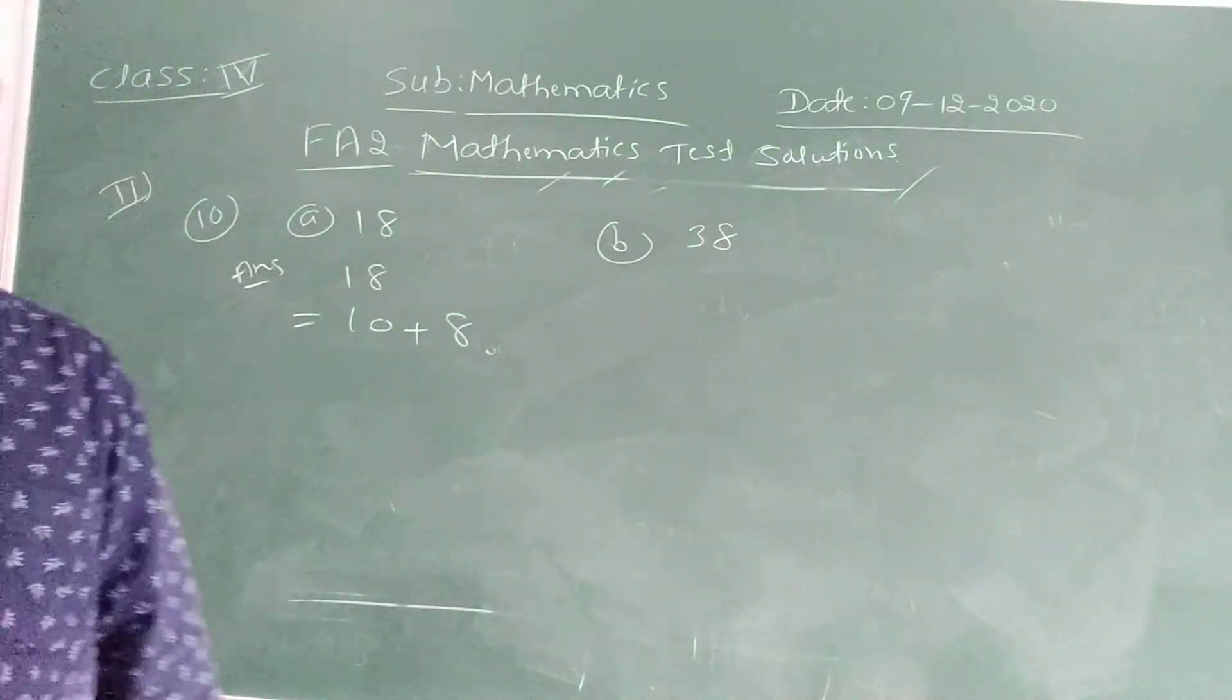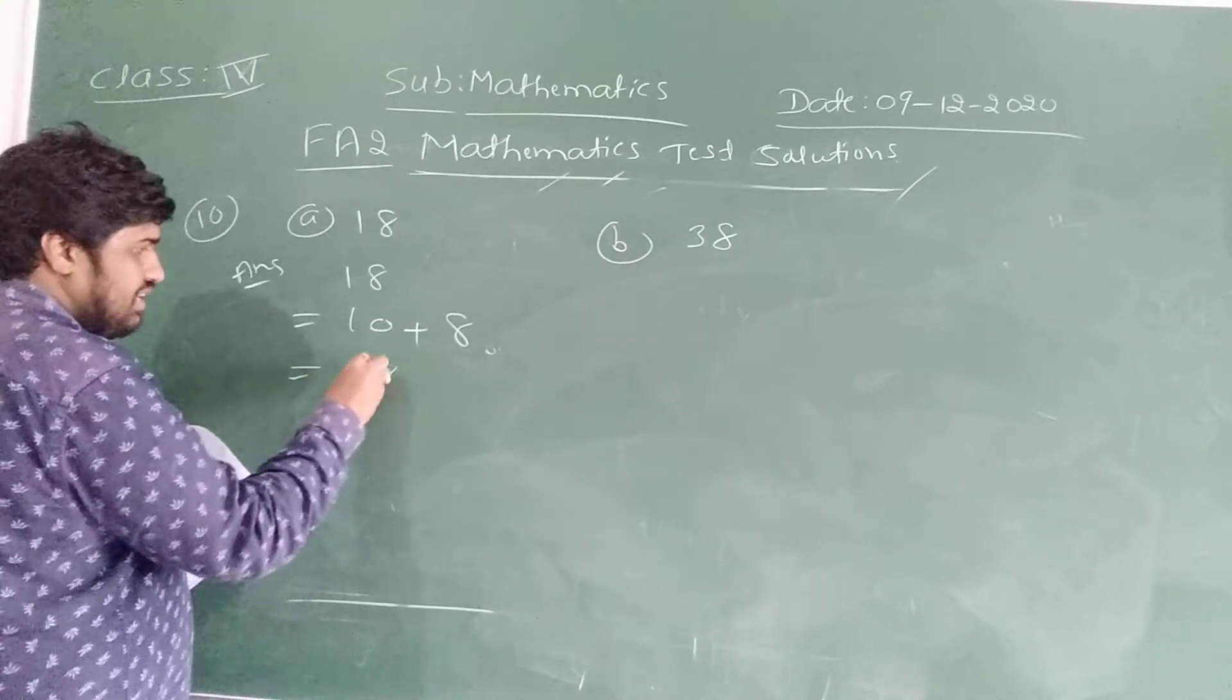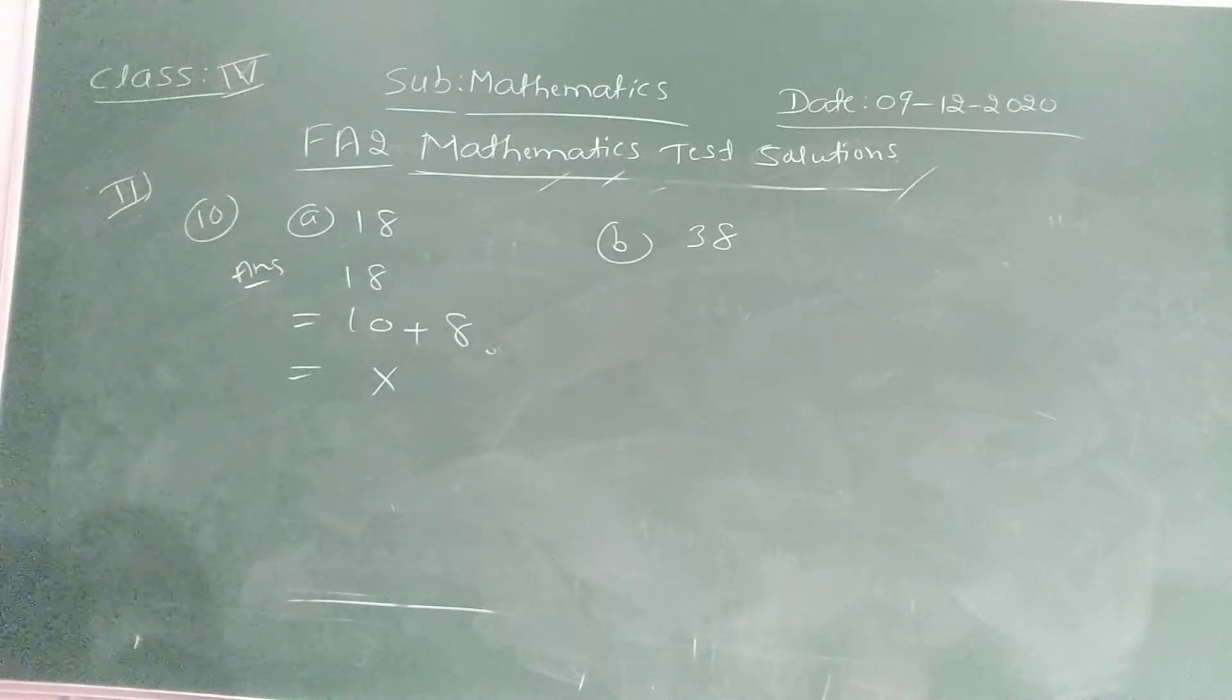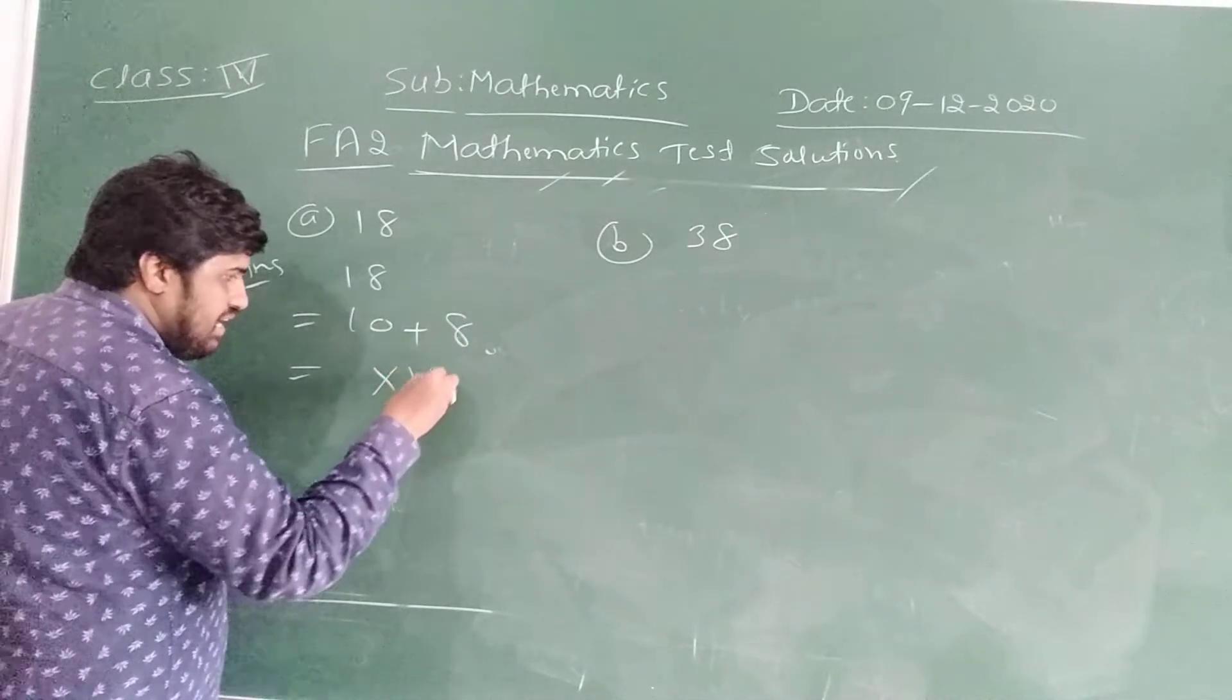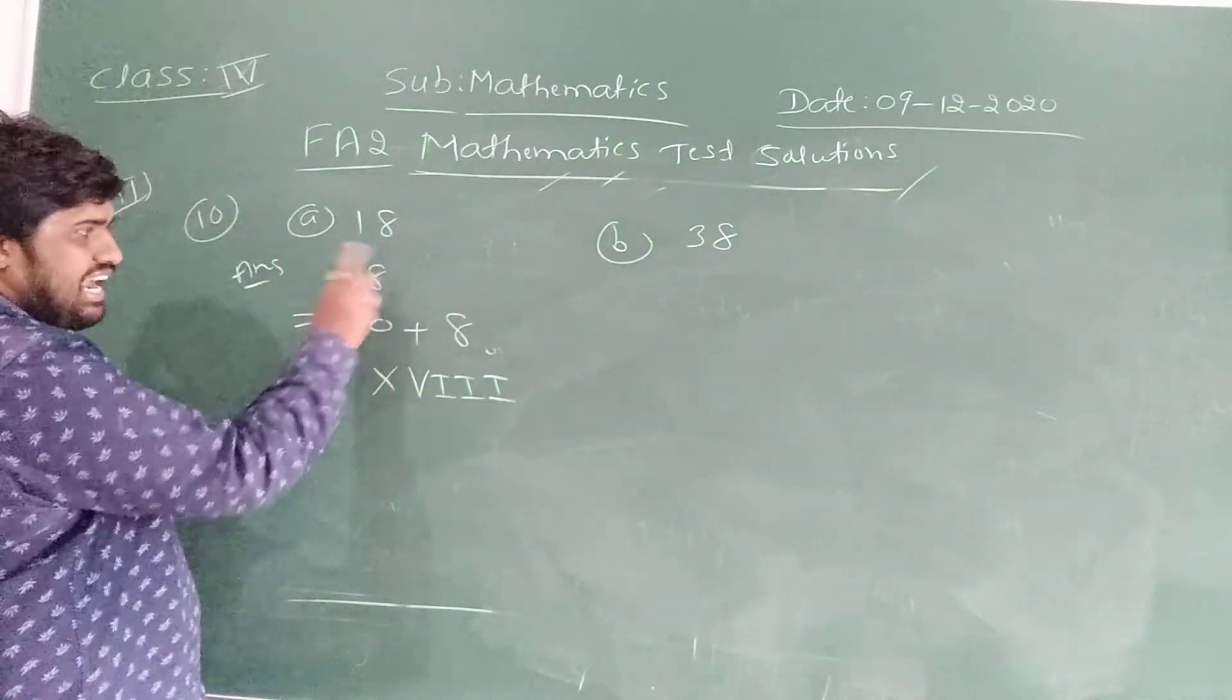10 plus 8 is 18. How to write in Roman number? 10 means X. Yes. Now 8 indicate V I I I. You understand. How to write 8? V I I I. Therefore 8 can be determined as V I I I. That's it. This indicates 18.